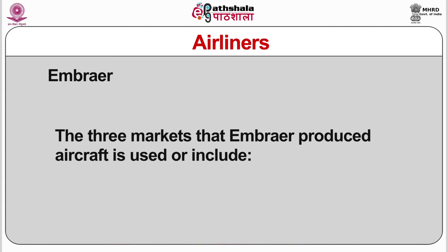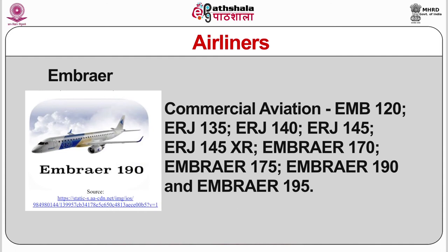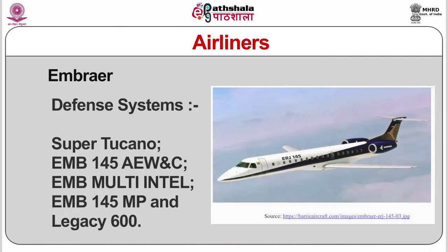Embraer produces aircraft for three market categories. The first is commercial aviation, which includes the Embraer 120, ERJ-135, ERJ-140, ERJ-145, ERJ-145XR, Embraer 170, 175, 190, and 195. The second category is Defence Systems, which includes the Super Tucano, EMB-145 AEW&C, EMB Multi-Intel, EMB-145MP, and Legacy 600.